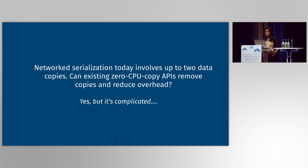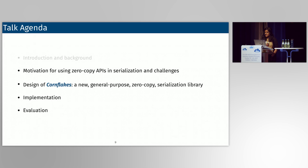You may have heard of zero CPU copy, or more commonly referred to as zero copy APIs. Can we use those here to reduce the copies in serialization and remove its overhead? Surely zero copies must be better than two copies. And the answer is yes, we can use these APIs, but they come with a bunch of tradeoffs that need to be carefully managed.